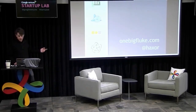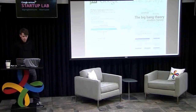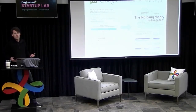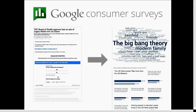My blog is at onebigfluke.com. I'm hackstore on Twitter. The product I work on now is called Google Consumer Surveys. It's a market research platform for everyone — five to ten times cheaper than everything else out there. We ask people questions on publisher content sites instead of paywalls. Users get free content, researchers get good data, and publishers get paid. It's a win-win-win. Getting into consumer surveys really got me into data, analysis, statistical significance, and all that kind of stuff.